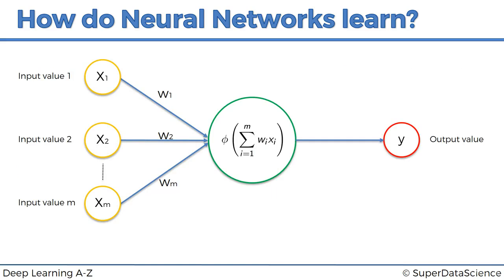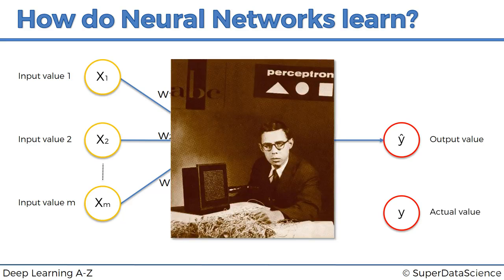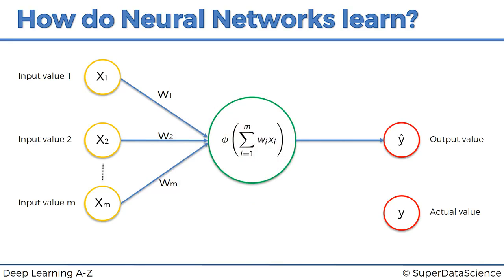Here we have a very basic neural network with one layer — this is called a single layer feedforward neural network, and it is also called a perceptron. One thing we need to adjust is the output value. Right now it's just a y, but we need to put a y-hat in there. Y stands for the actual value we see in reality, while y-hat is the predicted value output by the neural network. The perceptron was first invented in 1957 by Frank Rosenblatt, whose whole idea was to create something that can actually learn and adjust itself. So let's see how our perceptron learns.